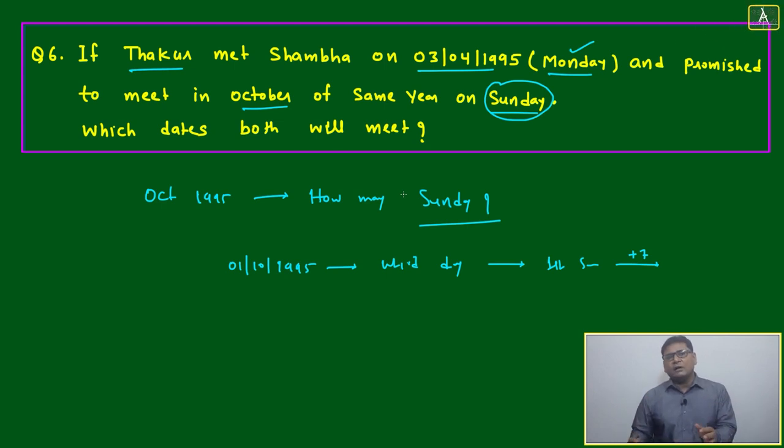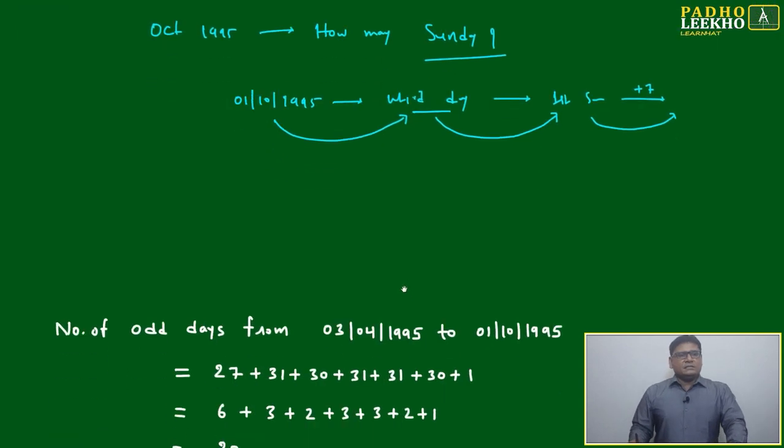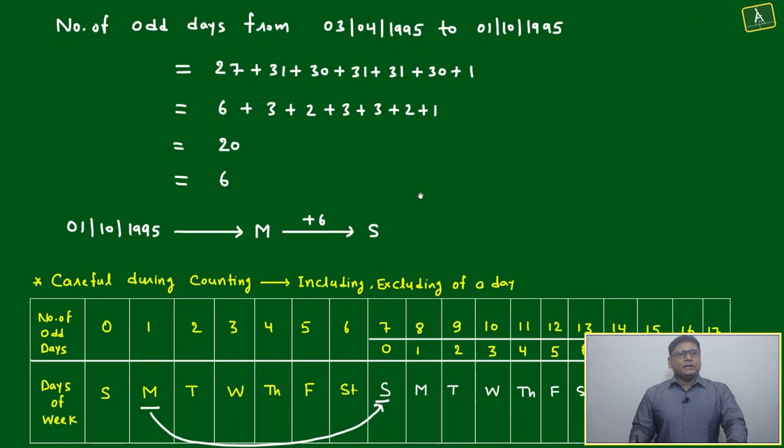Then how to calculate first October 1995? Reference we have: number of days from 3rd April to 1st October, and find the odd days. And based on that, we will be able to decide which day is 1st October 1995. Based on this, we will be able to decide which one will be first Sunday. Once we got first Sunday, take the repetition of seven. Over - just systematic way, we will be able to solve like this.